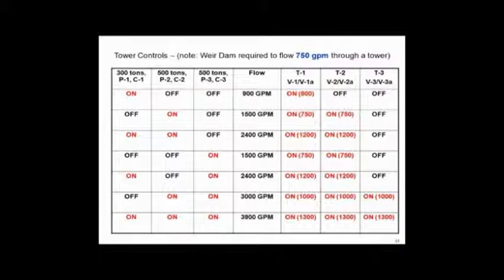Let's start off with a wintertime operation. The little 900 ton chiller's on line. So P1's on, C1's off. P2, chiller 2, chiller 2 is off. Same thing for 3, it's off. So what is the flow rate going out to my towers? 900 GPM. Great. I've got 900 GPM going to my towers.